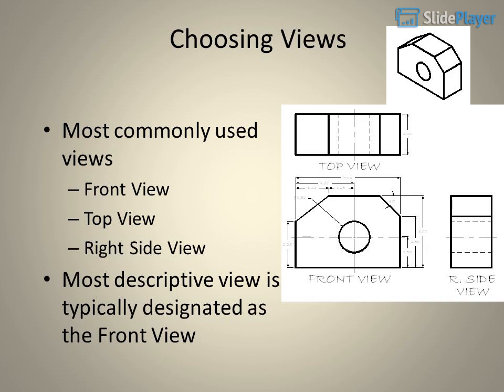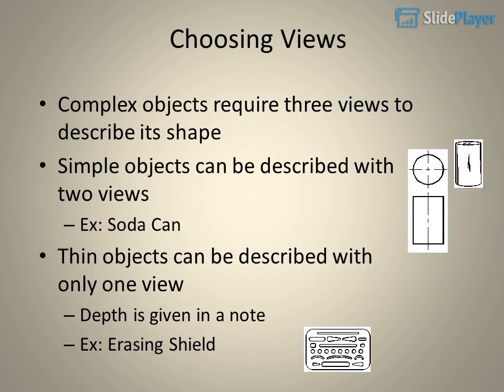The most commonly used views are the front view, top view, and right side view. The most descriptive view is typically designated as the front view. Complex objects require three views to describe their shape, while simple objects can be described with two views, such as a soda can. Thin objects can be described with only one view, with depth given in a note.